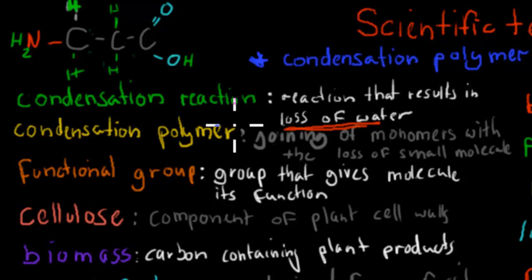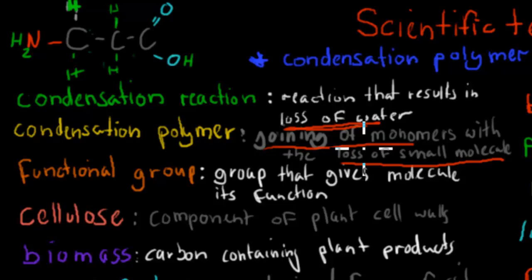Condensation polymer, that was a joining of monomers together with the loss of a small molecule, which often is water, but it doesn't have to be. In a polymer, it means we have different monomers which are joined together, and you have loss of a water molecule to form a condensation polymer.